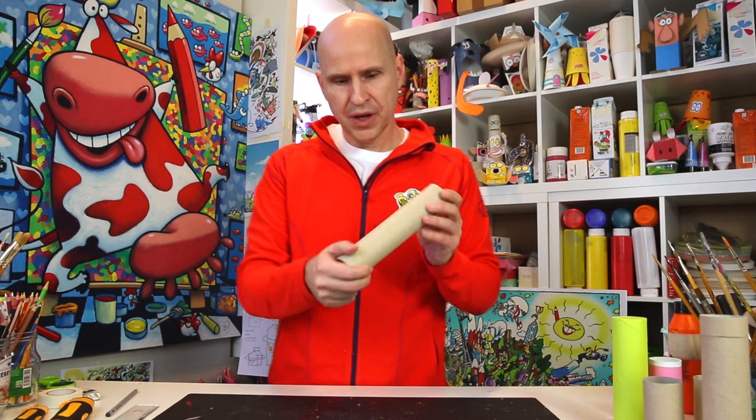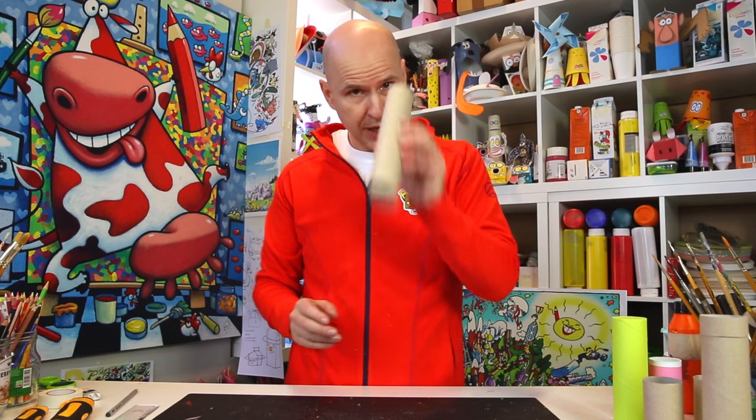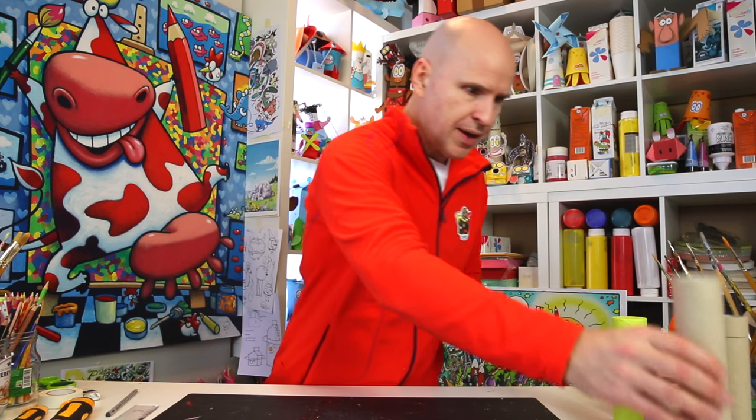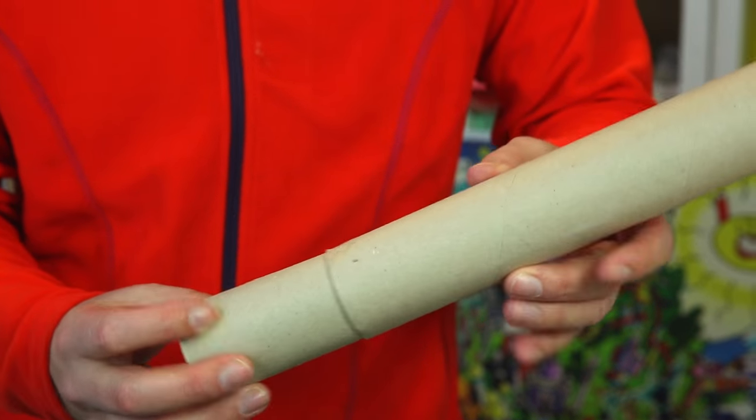A kitchen roll, or you can use two toilet rolls and tape them together or glue them together. But the kitchen roll is really good. Toilet roll - it needs to be small enough to fit into the kitchen roll like this.